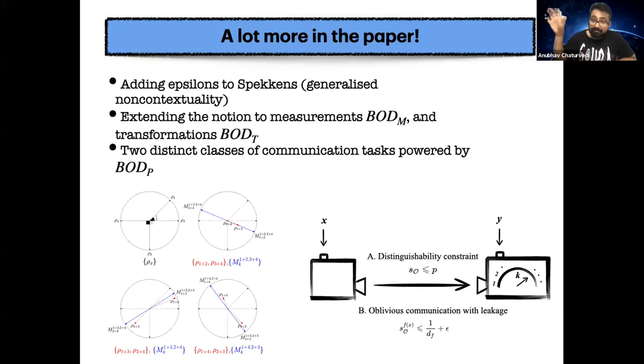There's a lot more in the paper. We add epsilons to generalize non-contextuality and transformations, and of course we care about advantage. So we give two different tasks that give advantage. The second one is my favorite, which is Alice has some secret but leaks a little bit. So there's a lot more in the paper. Do check out the paper.